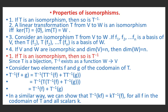Now, properties of isomorphisms. First: if T is an isomorphism then T⁻¹ is also an isomorphism. Second: a linear transformation T from V to W is an isomorphism if and only if the kernel of T equals {0} and the image of T equals W. Third: if f₁, f₂, …, fₙ is a basis of V then T(f₁), T(f₂), …, T(fₙ) is a basis of W. Fourth: if V and W are isomorphic and dim(V) = n then dim(W) = n.